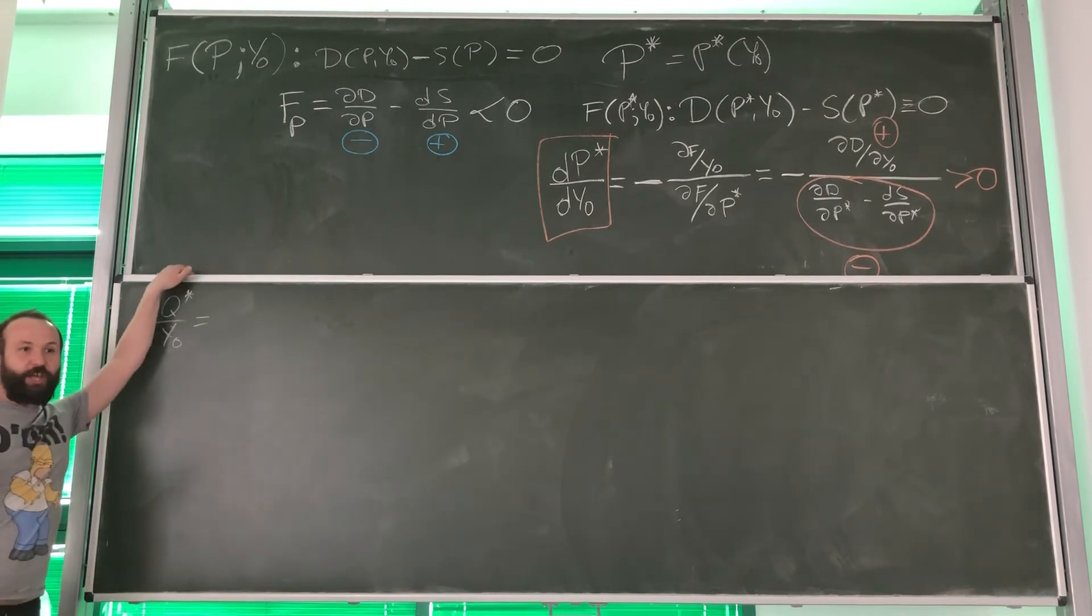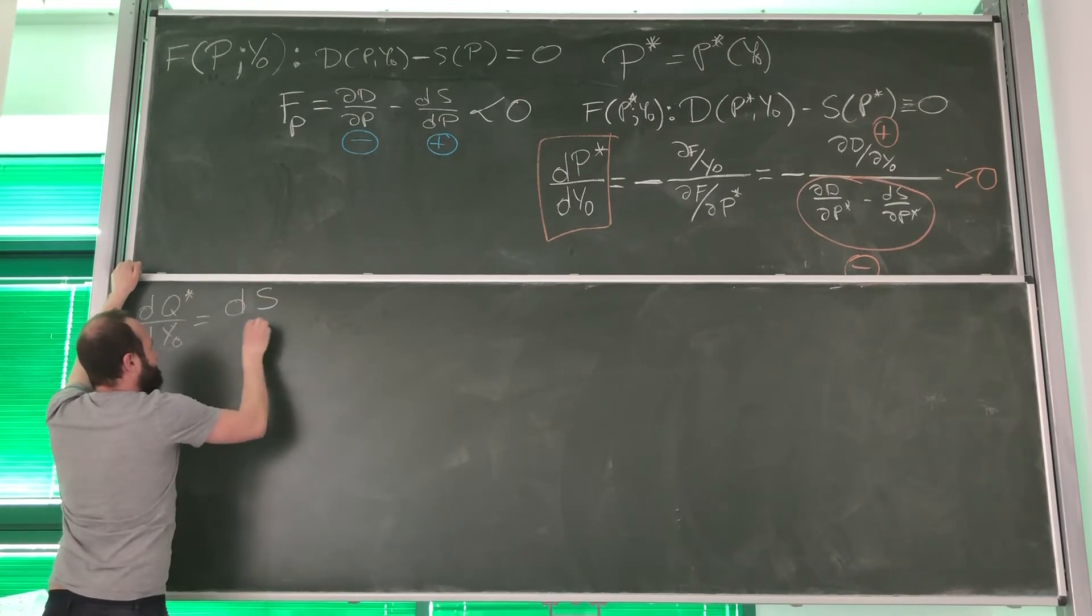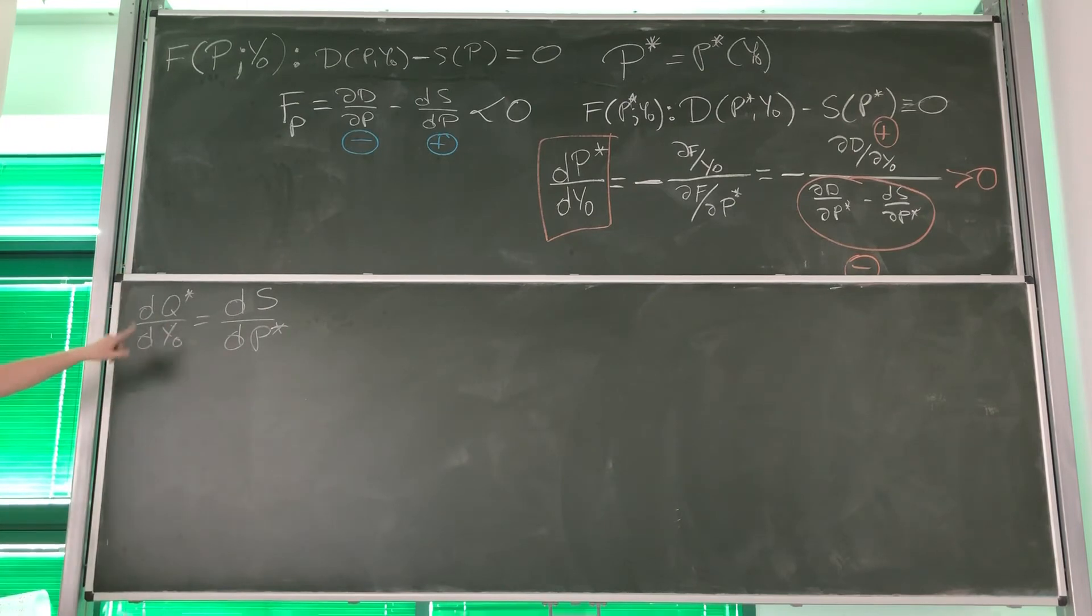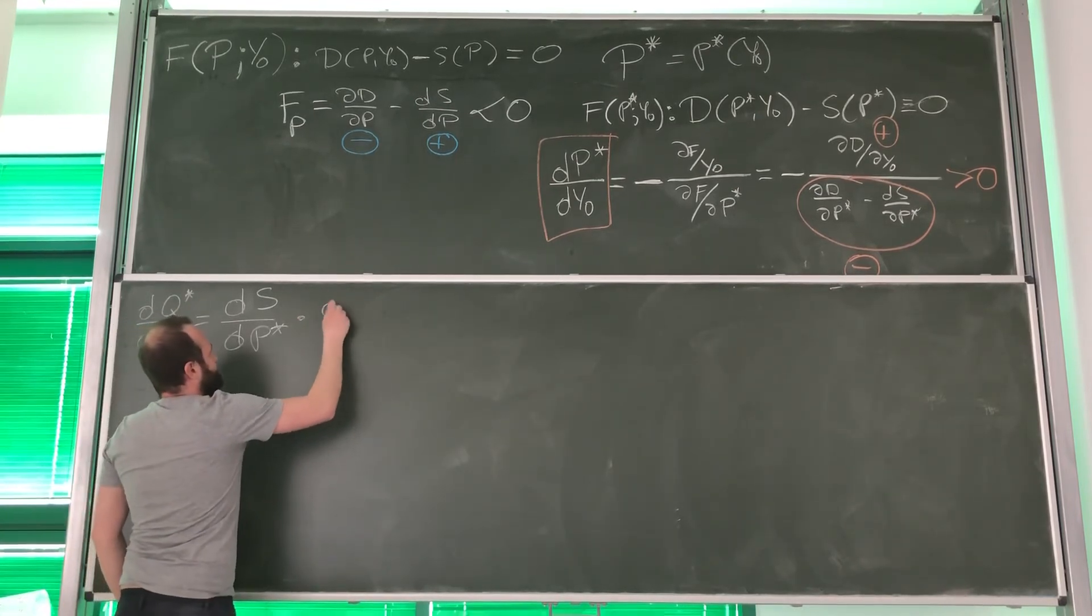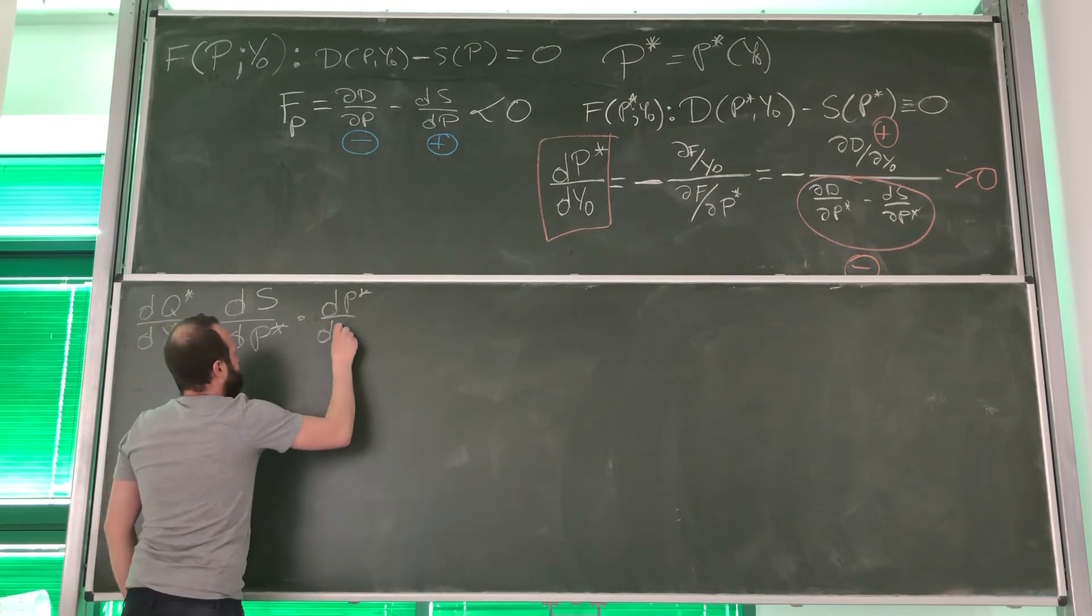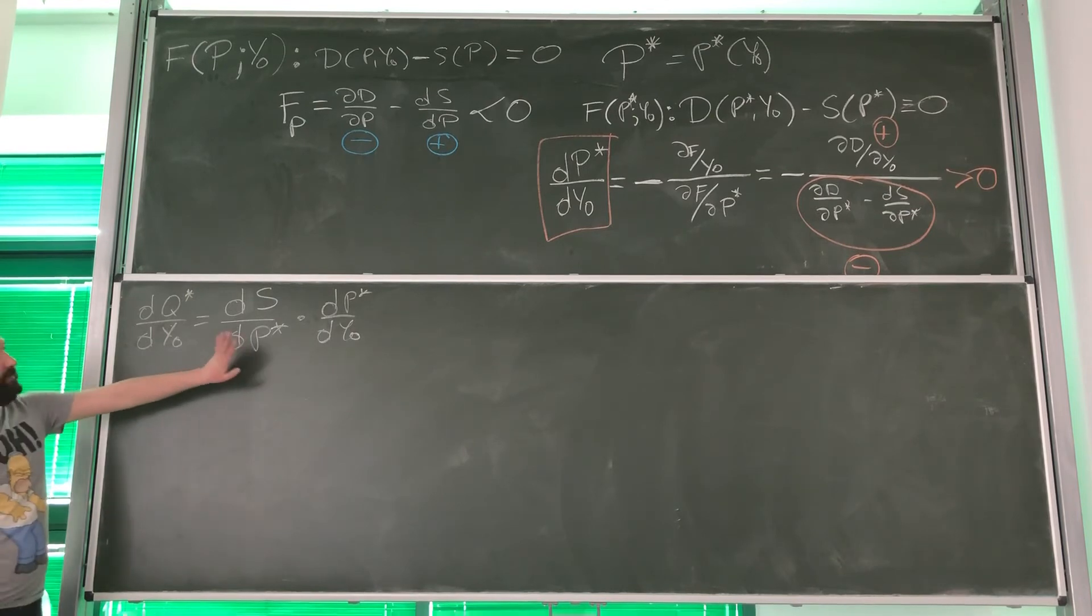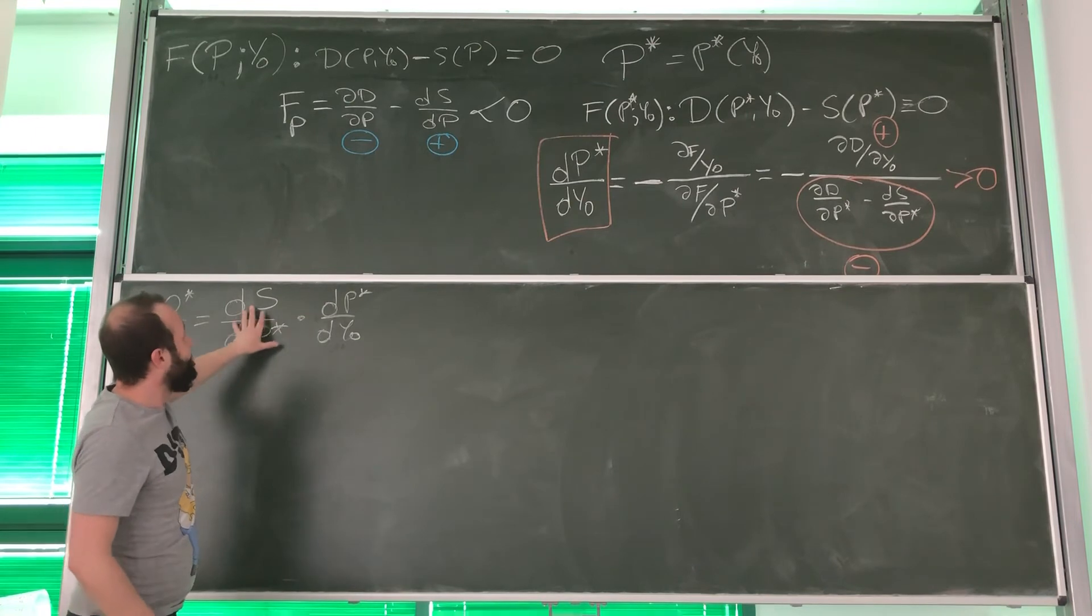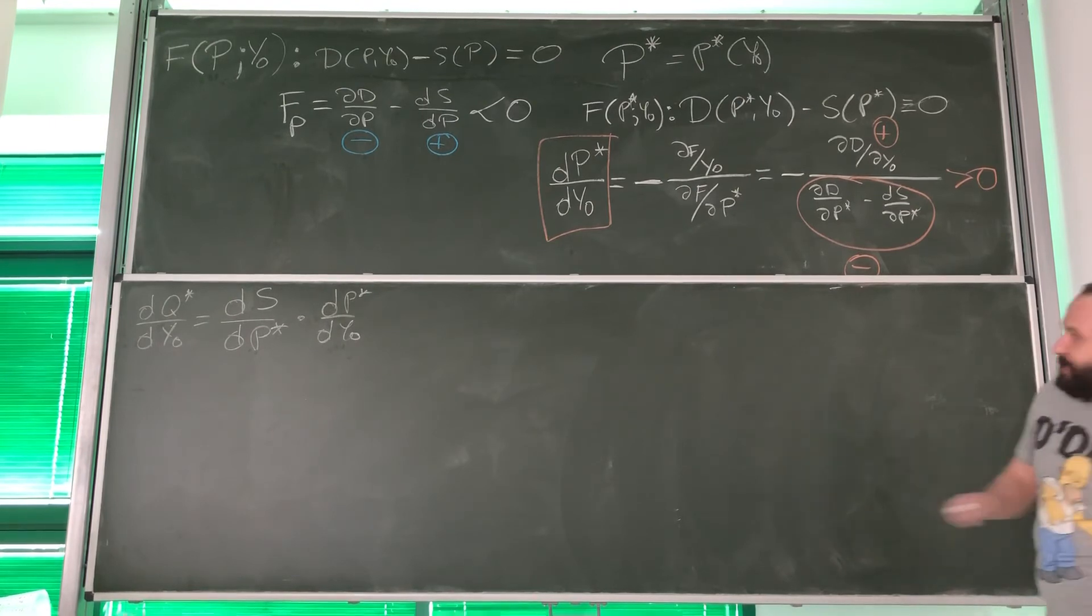So what is dQ/dY0? Look, if I'm going to calculate this derivative, look, it must be equal to dQ/dP times dP/dY0. This is the derivative that we know and this is the derivative that we already calculated, right? But why does it need to be like that?